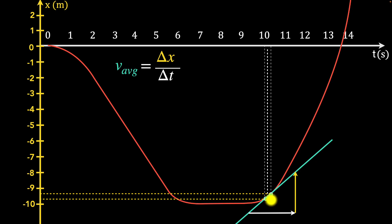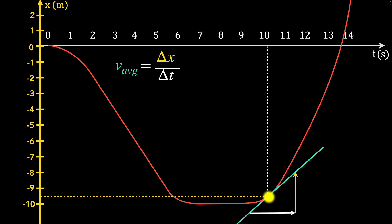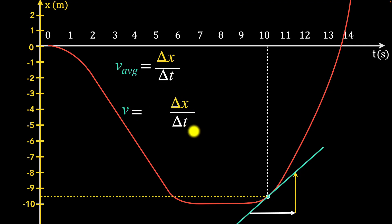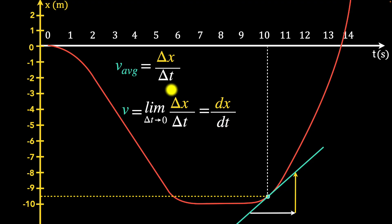The closer the two points, the better the estimate. In the limiting case, when the two points just merge together, the secant line turns into a tangent at that particular point. So the slope of the tangent represents the velocity at that particular instant. We write it as delta x over delta t, taking the limit as delta t tends to zero — we call this the derivative of position with respect to time. Average velocity is the slope of the secant line; instantaneous velocity is the slope of the tangent line. The magnitude of instantaneous velocity directly tells you the speed.